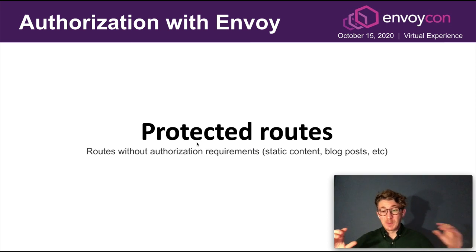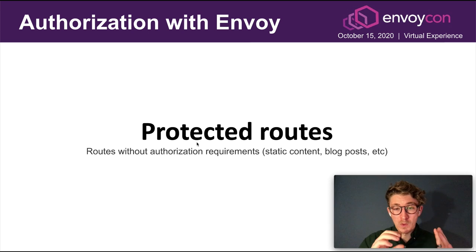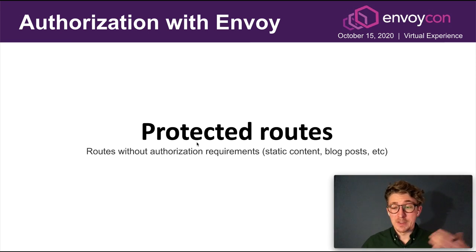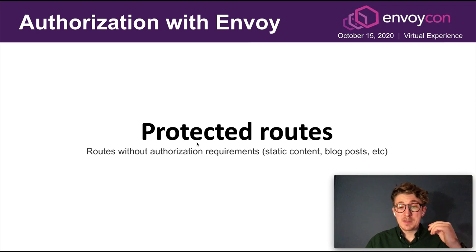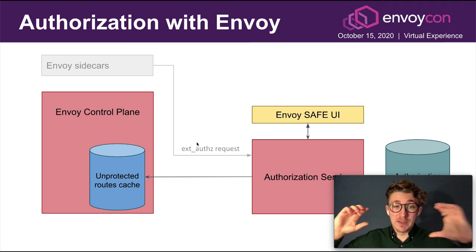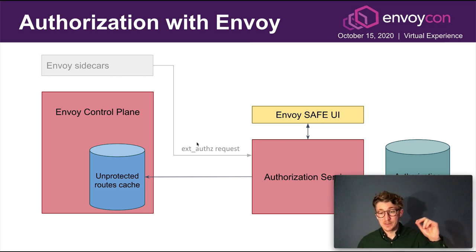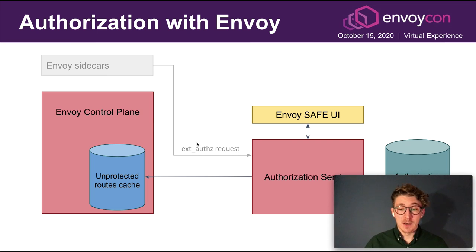We had Envoy calling the authorization service for every single request, so we introduced the concept of protected and unprotected routes. Unprotected routes — static content, blog posts, images — do not need authorization, so we don't want Envoy calling the authorization service for them, as that wastes resources. We gave service owners the option to flag whether their routes required authorization or authentication, then built an integration with our centralized control plane and authorization service that would send the unprotected routes to the control plane. When the control plane builds a new snapshot for an Envoy sidecar, it knows for which routes to disable the external OTZ filter.